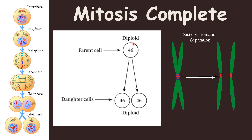The 23 pairs are always present in the form of homologous chromosomes, as one chromosome of each pair comes from the mother and one from the father. So 23 homologous pairs make up 46 chromosomes. When they are divided, they give rise to 46 and 46 identical sets.